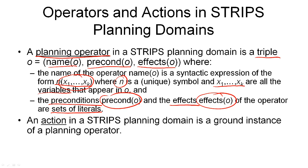Traditionally, the positive literals that are effects are referred to as the add list, as these are asserted in the new state after an action is applied. The negative literals are referred to as the delete list, as these are removed from the state. An operator is generic in that it only specifies what is manipulated as variables. An action, on the other hand, is specific because it is a ground instance of a planning operator — we take all the variables and choose objects in our domain for them. There can be many actions that are instances of the same operator in our planning domain.